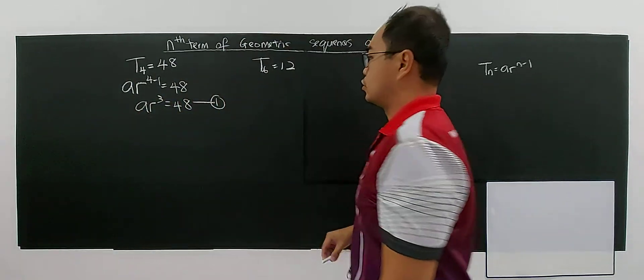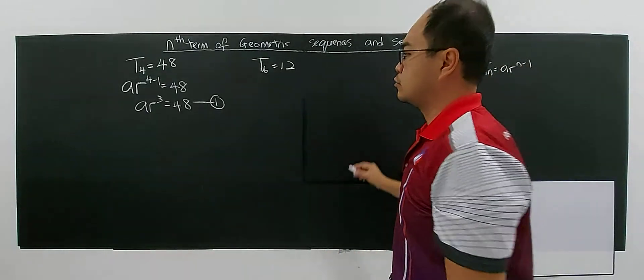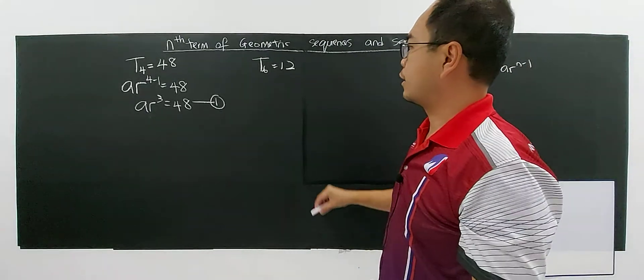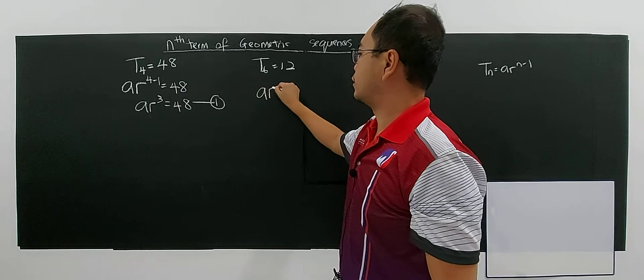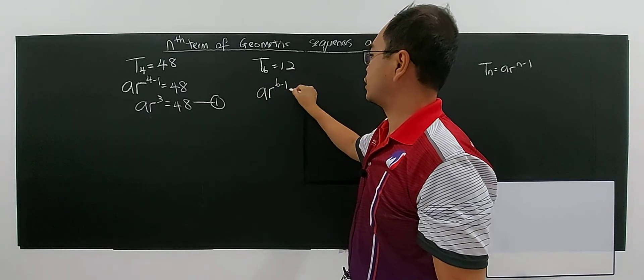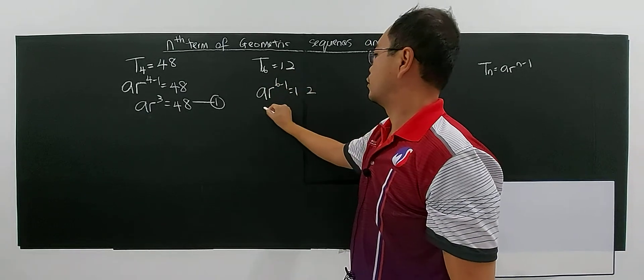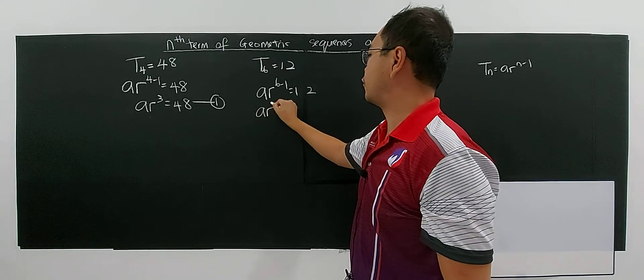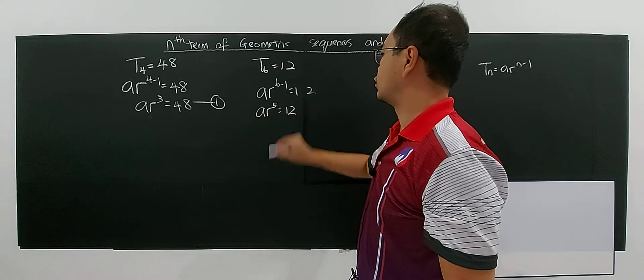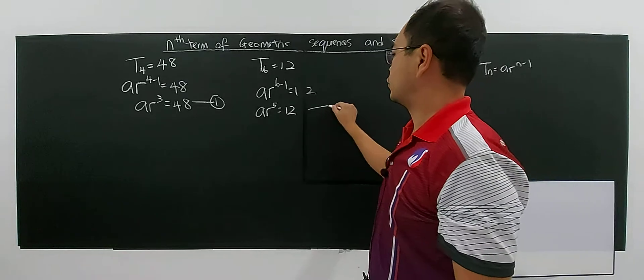Now you need a second equation to help you find the values of a and r. For this, you have ar^(6-1) = 12, which gives you ar⁵ = 12. This is equation 2.